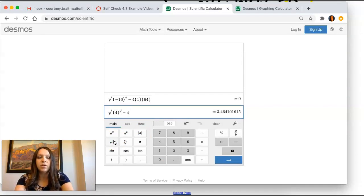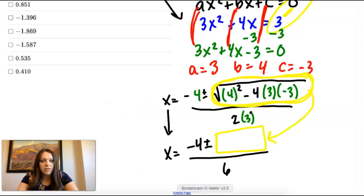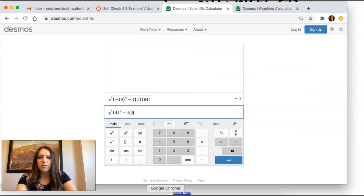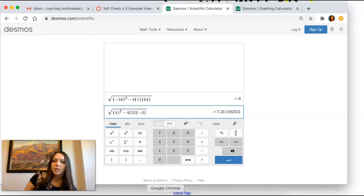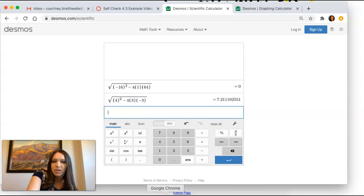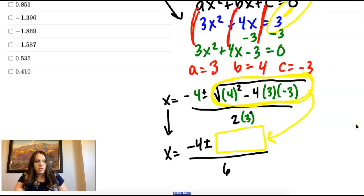Minus 4, times 3, times negative 3. So I typed it in just like I wrote it. And we get 7.21.